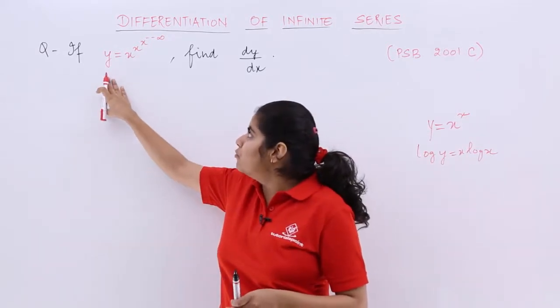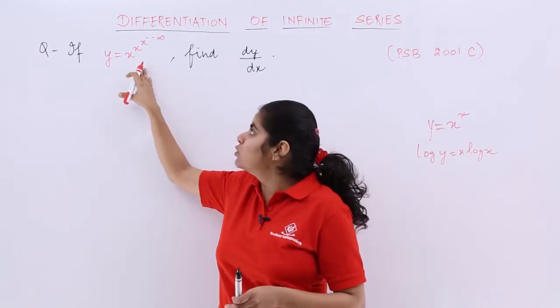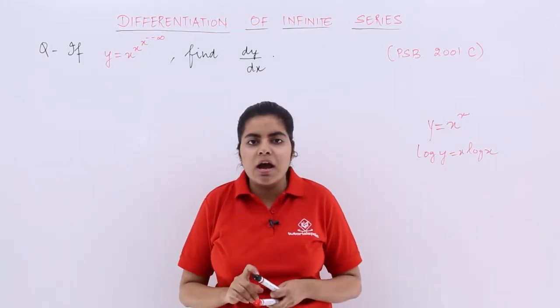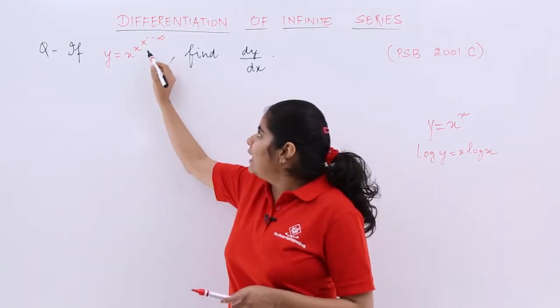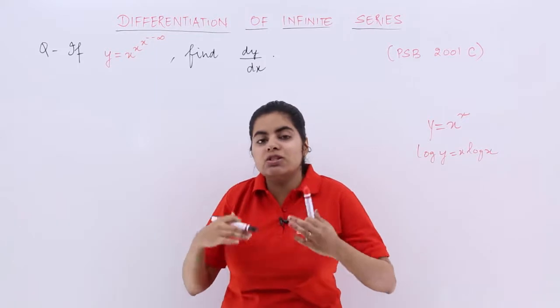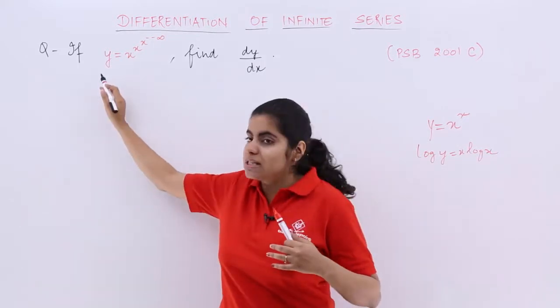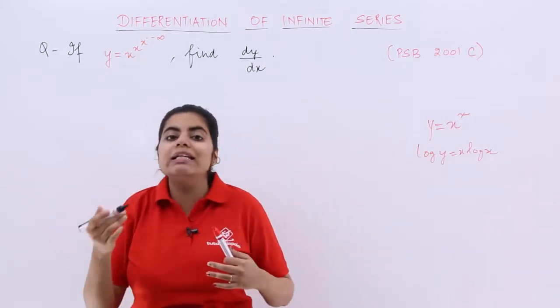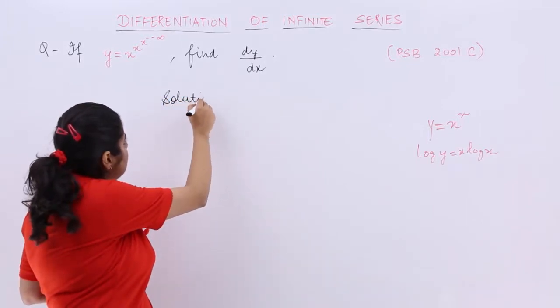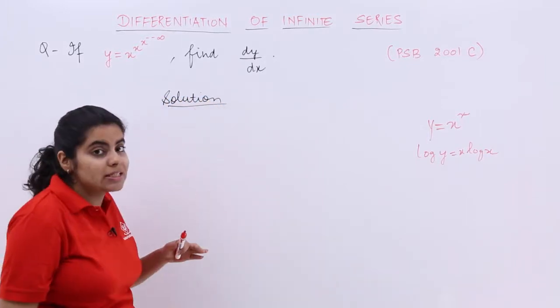So here you see that y is actually equal to x raised to the power x raised to the power x many times. But what we can do is we can take out one thing out of it. If x raised to the power repeated times x is y, what I can say here...